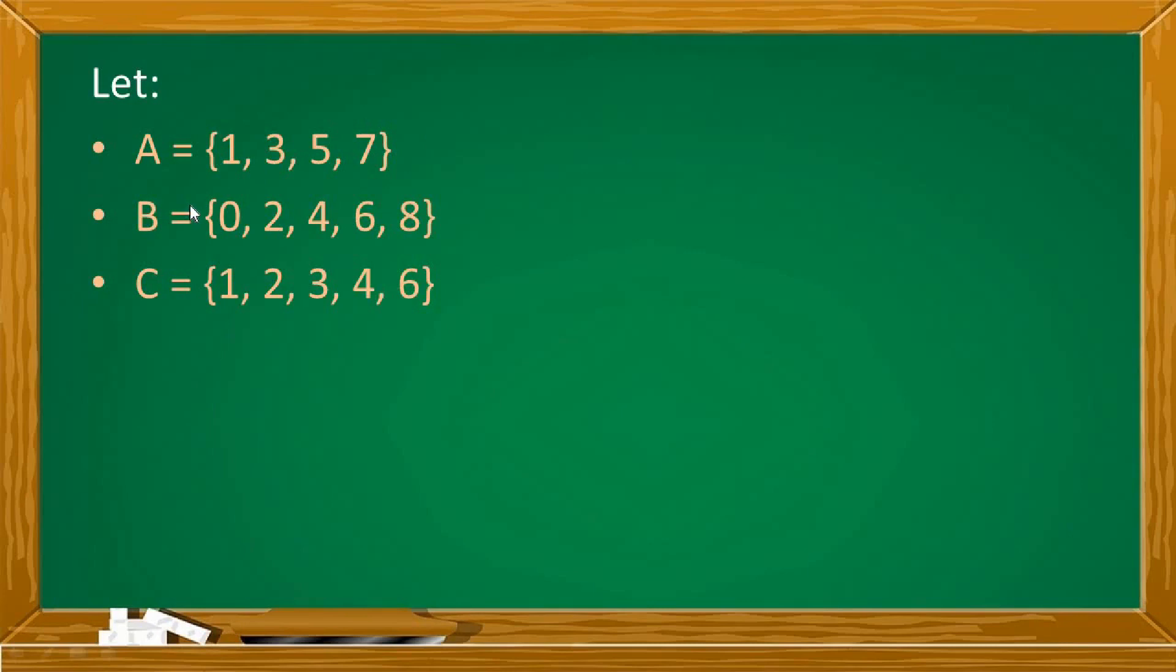Let A be a set with elements 1, 3, 5, and 7. B is equal to a set with elements 0, 2, 4, 6, and 8. And C is equal to a set with elements 1, 2, 3, 4, and 6. Answer the following.